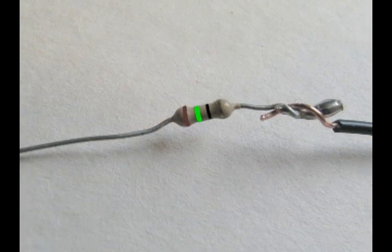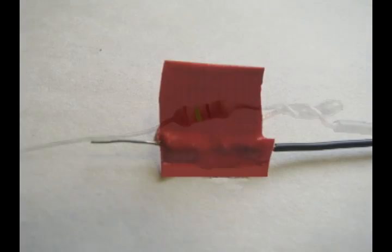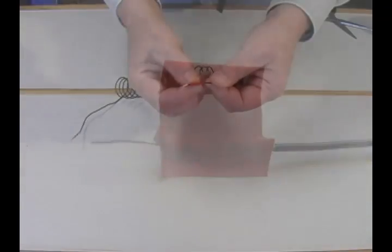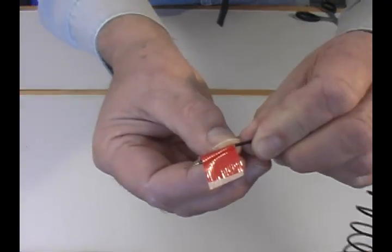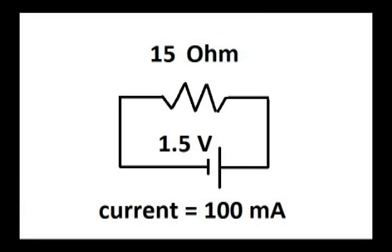I used a 15 ohm resistor soldered and taped to the end of the wire. The purpose of the resistor is to reduce the current flow so the wire and battery will not overheat. Without the resistor, you could create a short circuit.